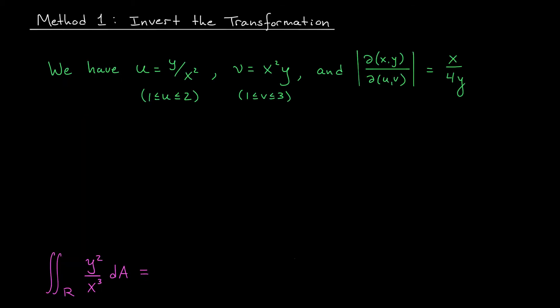Here's where we are so far. We've defined new variables u and v in terms of x and y. We calculated the Jacobian of this transformation and showed that it's equal to x over 4y in absolute value. We'd now like to use the change of variables formula to put everything together and rewrite our integral as a double integral involving u and v. The problem, though, is that currently everything here is expressed in terms of x and y.